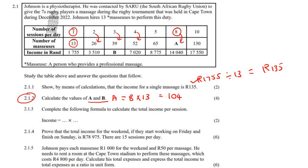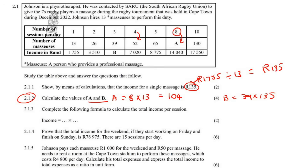To calculate B, we know that to go from the number of massages to the total income, you multiply by the price of a single massage, which is R135. So taking that number and multiplying by 135 gives us B equals R5,265.